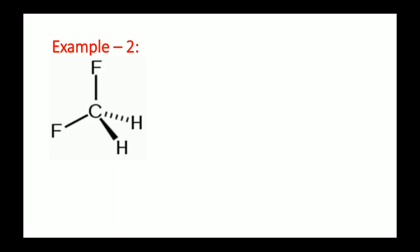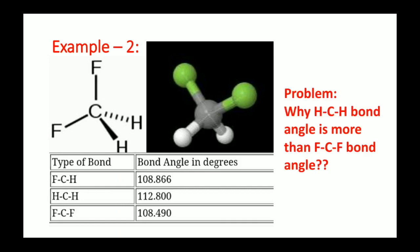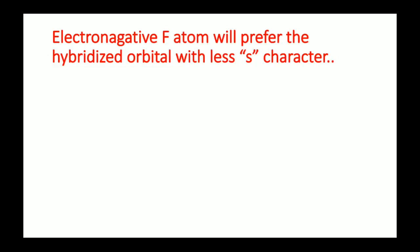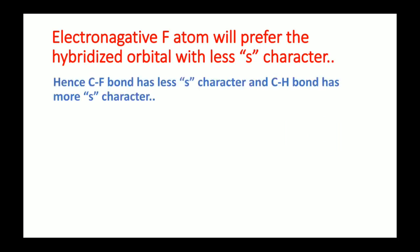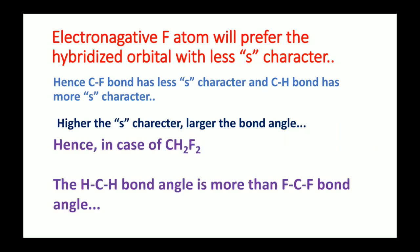Example 2: CH₂F₂. This is the 3D structure of CH₂F₂. There are three types of bond angles: F–C–H, H–C–H, and F–C–F. Since it is sp³ hybridization, all bond angles should ideally be 109°, but the H–C–H bond angle is more than the F–C–F bond angle. This is explained by Bent's Rule: fluorine is more electronegative and prefers hybridized orbitals with less S character. Hence, the C–F bond has less S character, and since higher S character means larger bond angle, the H–C–H bond angle is larger while the F–C–F bond angle is smaller.